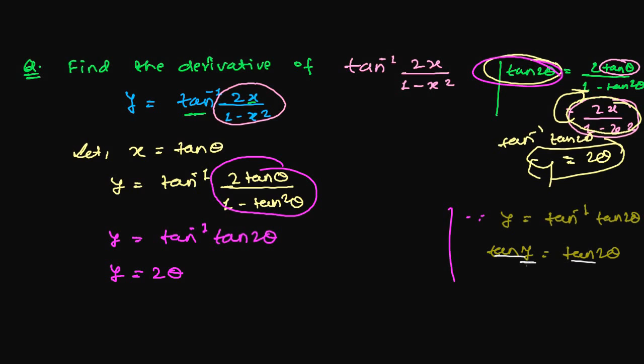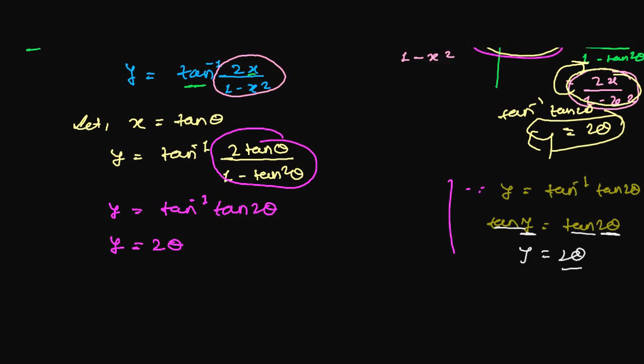Both side we have now tan here also tan, and we have y here and we have 2 theta, so y should be equal with 2 theta. And now we can differentiate both side with respect to x, but before that we need to write theta into the form of x.